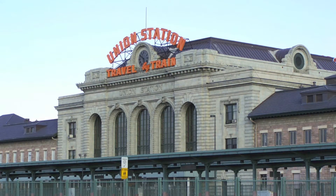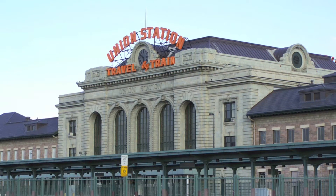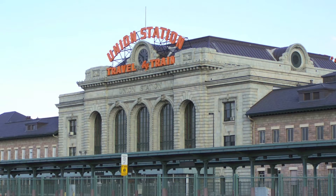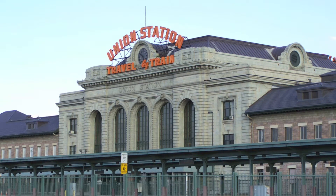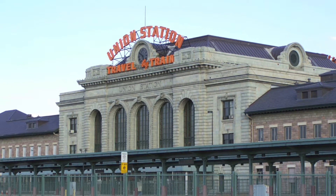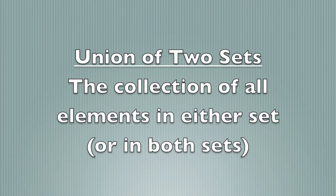The first way, called the union of the sets, just takes all of the elements from both sets and collects them together. In particular, an element is in the union of two sets if it is either in one set, or it is in the other, or possibly both.